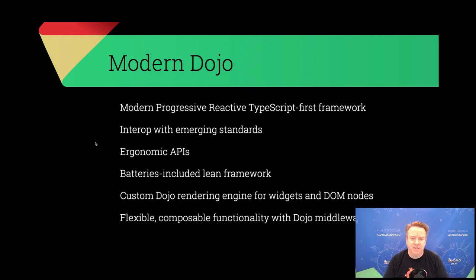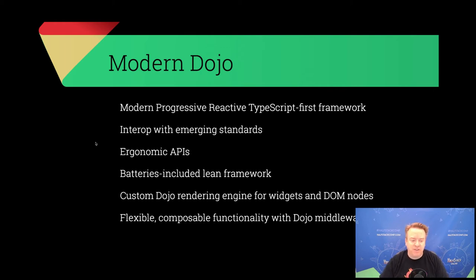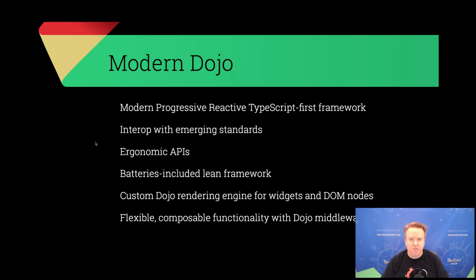Putting those things together means we can make assumptions about the framework that allow us to create something consistent and easy to use, resulting in really small modern applications. A hello-world style Dojo application is typically around 10 to 20 kilobytes gzipped, so it is quite tiny. We have a custom rendering engine for widgets and DOM nodes based on the virtual DOM pattern, with quite a few optimizations, and a flexible middleware approach to connect resources, data, or state to your application.